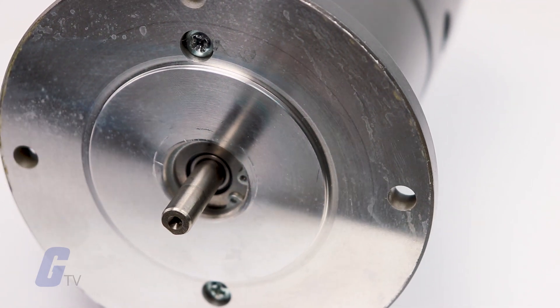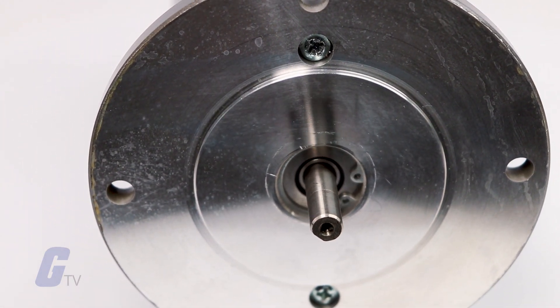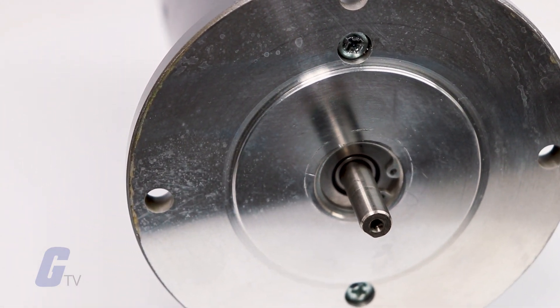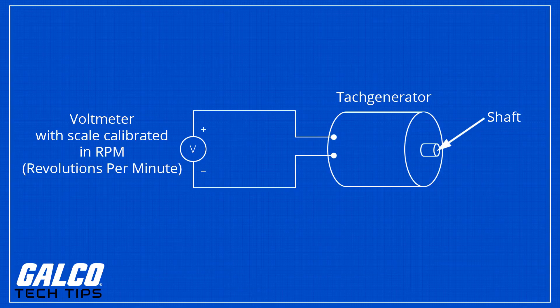TAC generators are outfitted with an armature, one end of which is attached to a motor or machine shaft. As the machine produces torque, the armature rotates within a magnetic field to induce voltage. The voltage measurement, directly proportional to the rotation speed, is converted to a speed value by a voltmeter connected to the armature.